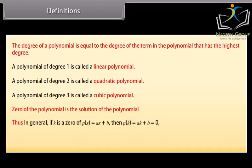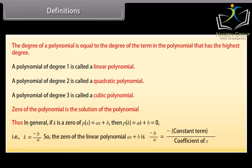Thus, in general, if k is a zero of p(x) which is equal to ax plus b, then p(k) is equal to ak plus b which equals 0. That is, k is equal to minus b upon a. So, the zero of the linear polynomial ax plus b is minus b upon a, which equals minus constant term upon coefficient of x.